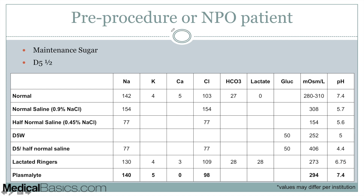The next scenario is a pre-procedure NPO patient — for example, someone with an ileus or obstruction who needs to be kept NPO. All they need is maintenance fluid. These patients are typically going to get D5 half normal saline, because you want to give them the sugar they need to keep their body running, and it also has a little bit of electrolytes as well.